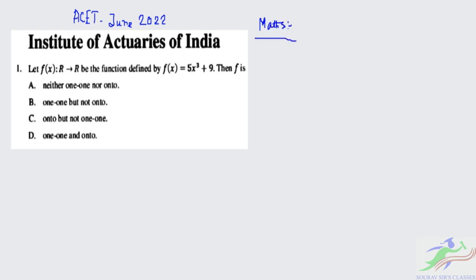This part is maths. So, question one says: let f(x) be a function mapping from real space R to R, defined by f(x) = 5x³ + 9. We have to find what the function f will be. Given it is 5x³ + 9.